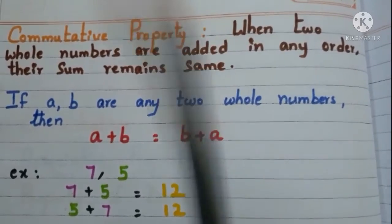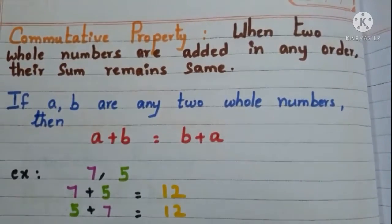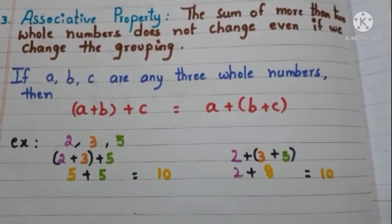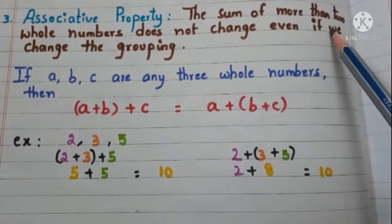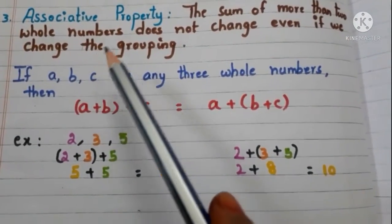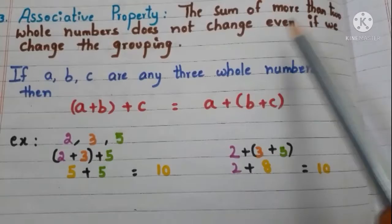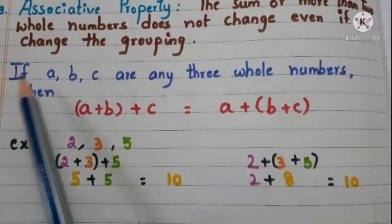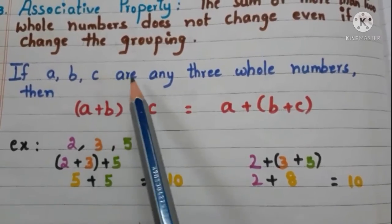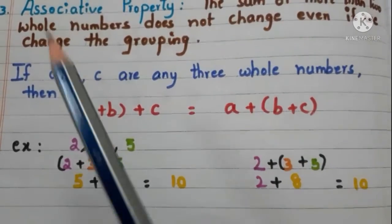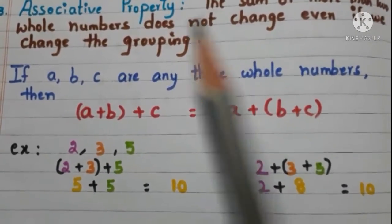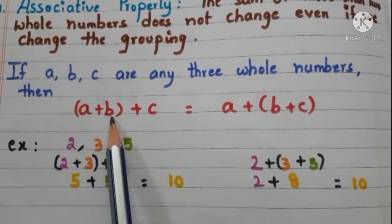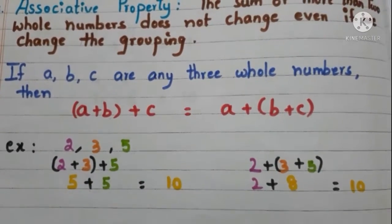Now associative property. The sum of more than two whole numbers does not change even if we change the grouping. If a, b, c are any three whole numbers then first add a and b and then add c. Now change the grouping.